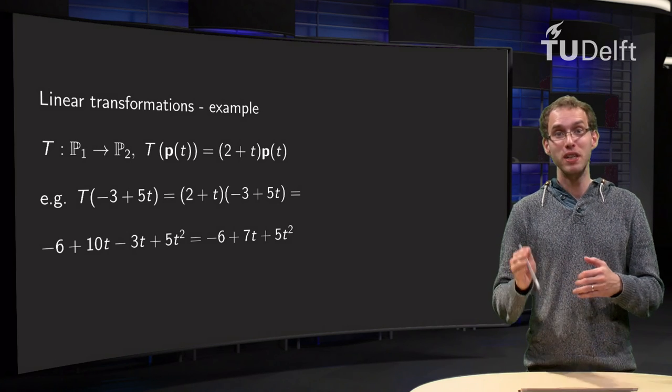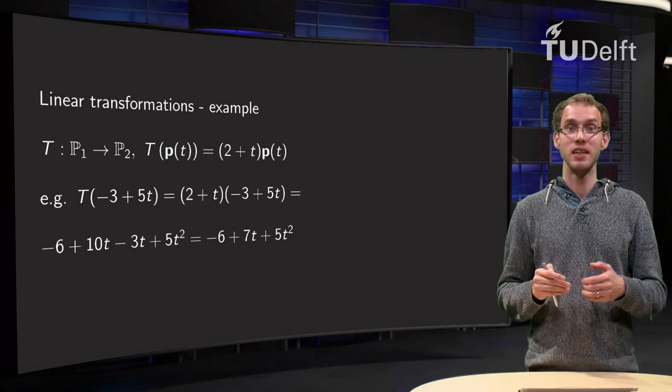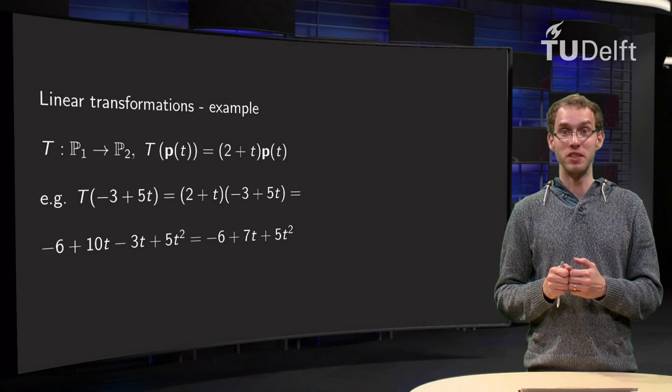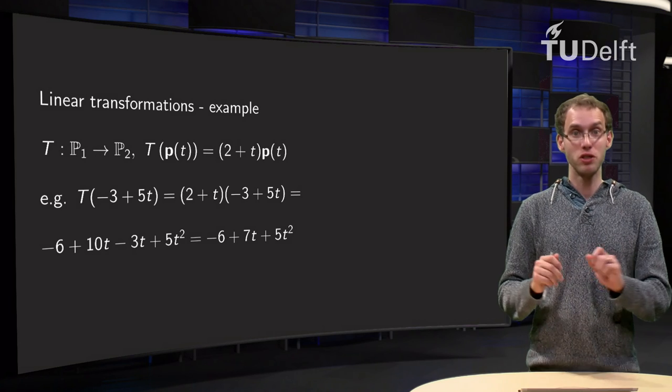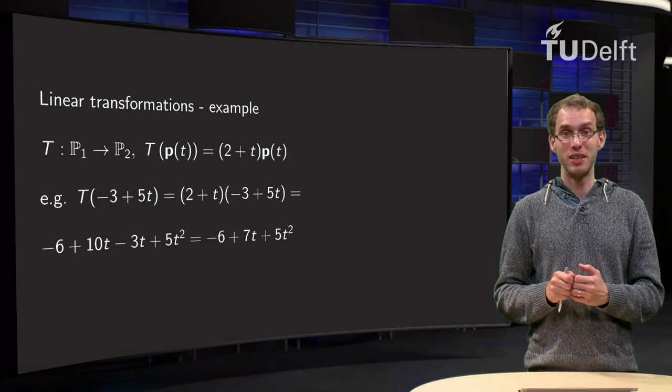But if we have a transformation from V to W, where V and W are some other general vector spaces, then the transformation will not be implemented anymore by a matrix, so that method will not help us.